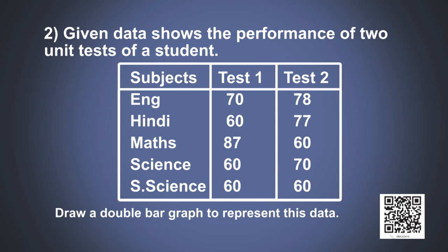Problem number 2. Given data shows performance of 2 unit tests of a student. In English she got 70 marks in first test and 78 marks in second test. In Hindi she got 60 marks in first test and 77 in second test. In Maths she got 87 in the first test and 60 in the second test. In Science she got 60 marks in the first test and 60 in the second test too. Now draw a double bar graph to represent this data.